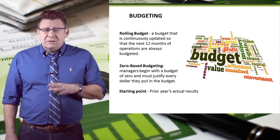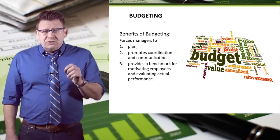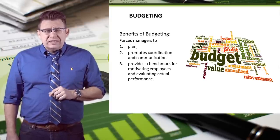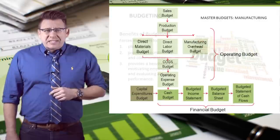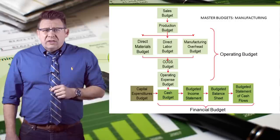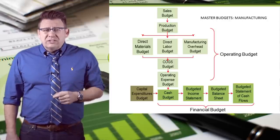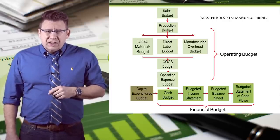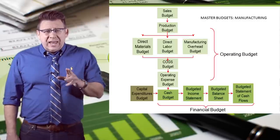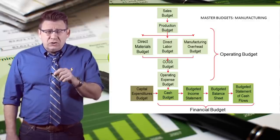The most common starting point for a budget is the prior year's actual results. There are many benefits to budgeting: they include forcing managers to plan activities, coordinate and communicate actions to other departments, and provide benchmarks for motivating employees and evaluating performance. The master budgets for manufacturers include the sales budget, production budget, direct materials, labor and overhead budgets, a cost of goods sold budget, and an operating expenses budget — collectively known as the operating budgets. There is also a capital expenditure budget, a cash budget, and the budgeted financial statements.